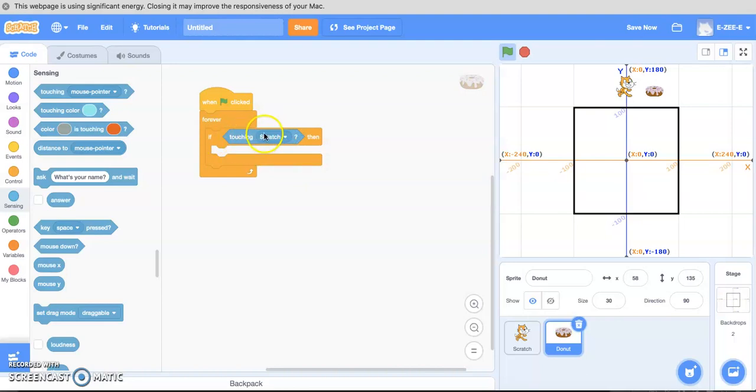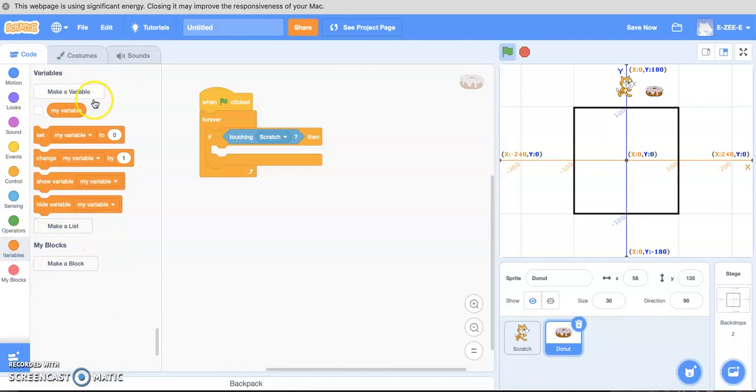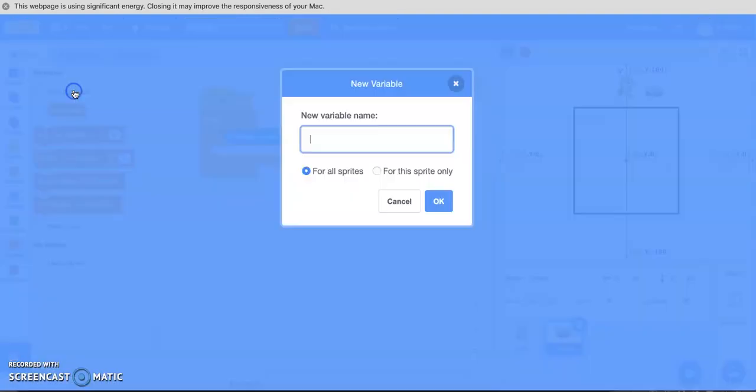So if touching Scratch then what we want to do is we want to do a little change. We want to add a variable. So we want to add some points. So go down to variables and right now we have no variables. So we need to make one. So just click on make a variable.